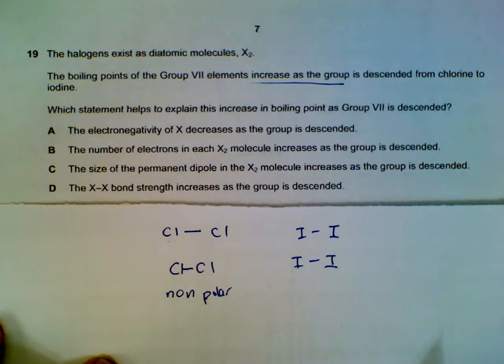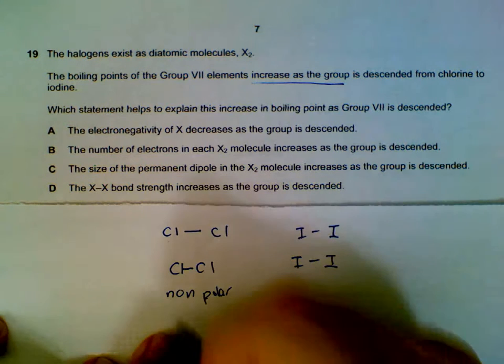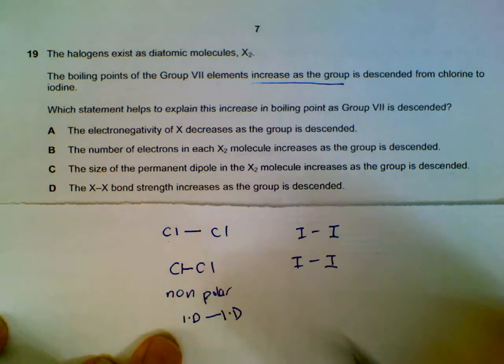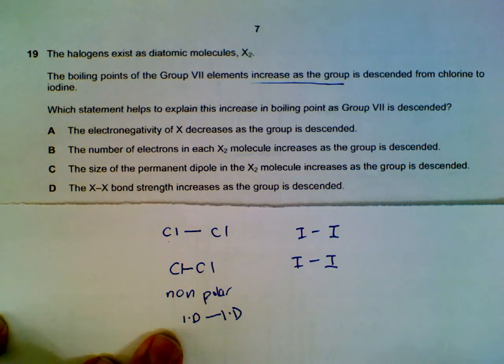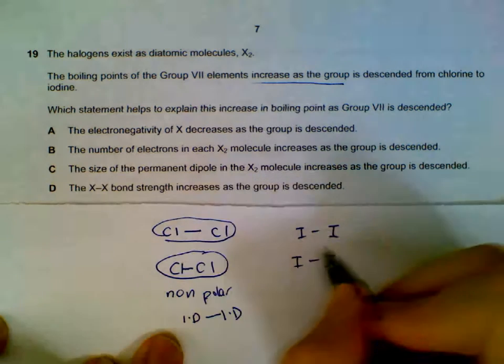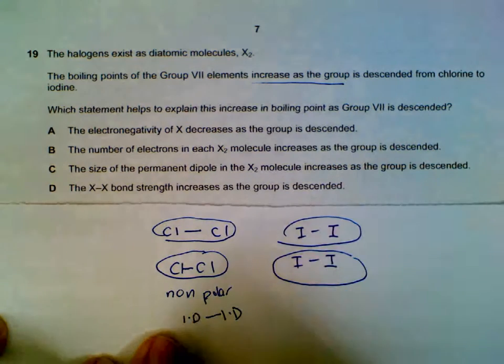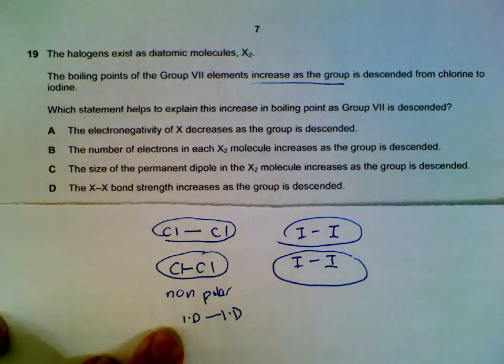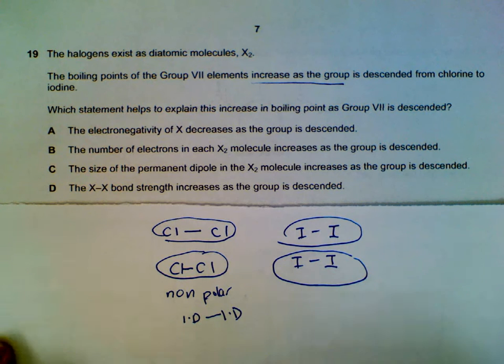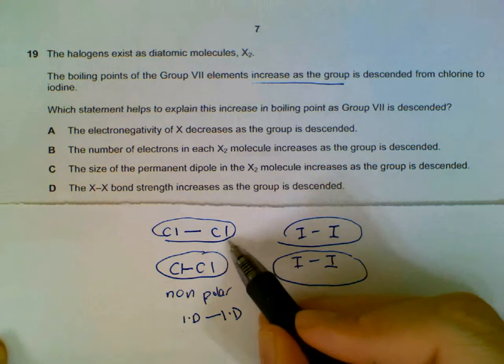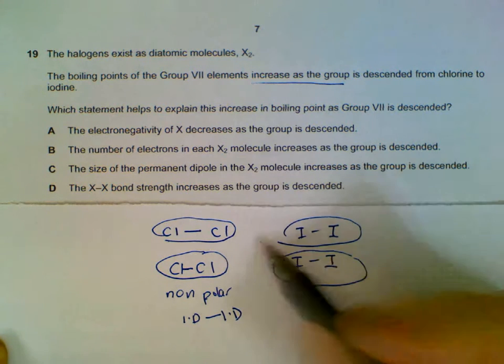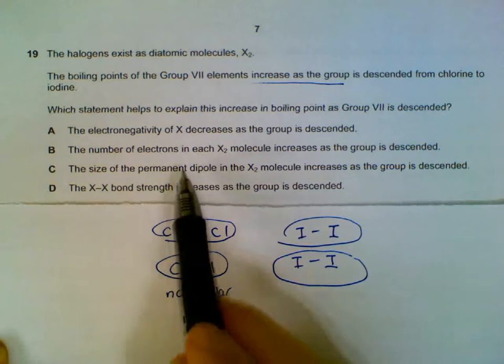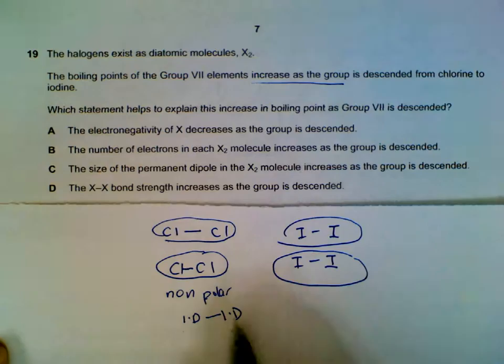It means how they attract each other - the intermolecular attraction will be instantaneous dipole induced dipole. And if you're comparing the instantaneous dipole induced dipole forces among molecules, what sets them apart will be the number of electrons that they have. Chlorine will have less electrons compared to bromine, compared to iodine. So number of electrons as they increase, the stronger will be the IDID, the higher will be the boiling point and melting point.